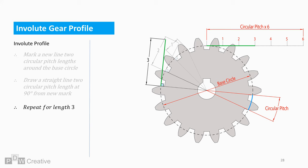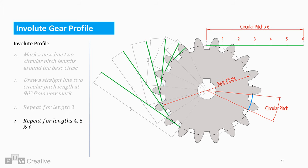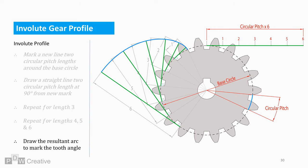Repeat the process for length three and continue until all six lengths are plotted. The involute can now be drawn. Draw the arc using the end points of each line as reference points. And that's how to draw the involute of the gear profile.